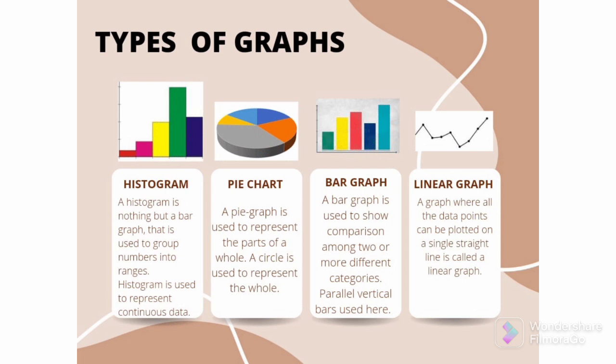If we observe the histogram and bar graph shown in the picture, it is clear that in histogram we represent the continuous data whereas in bar graph we represent the non-continuous data. Hence there is no space between the vertical bars in histogram whereas there is a space between the vertical bars or columns in bar graph. There is one more type of graph that is line graph where the points may be collinear or non-collinear.